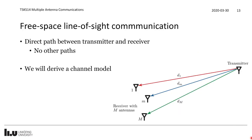Line-of-sight (LOS) communication occurs when transmitter and receiver can see each other with a direct path of length d. The channel gain is λ²/(4πd²). For free-space LOS with only a direct path and N receive antennas, we can derive a convenient analytical expression for the channel vector **g**, which allows us to understand how capacity behaves in LOS scenarios.